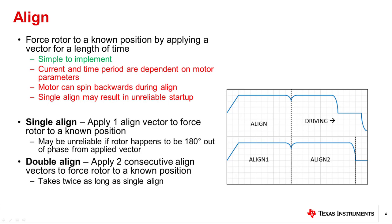Lastly, there is a small chance that the rotor happens to be 180 degrees out of phase from the Align vector, in which case the rotor will fail to align properly. One way to mitigate this potential downside is to use Double Align and apply two consecutive yet different Align vectors to ensure that the rotor will align to at least one of the applied vectors. Of course, the consequence of applying two Align vectors is that Double Align will take twice the time to complete compared to Single Align.